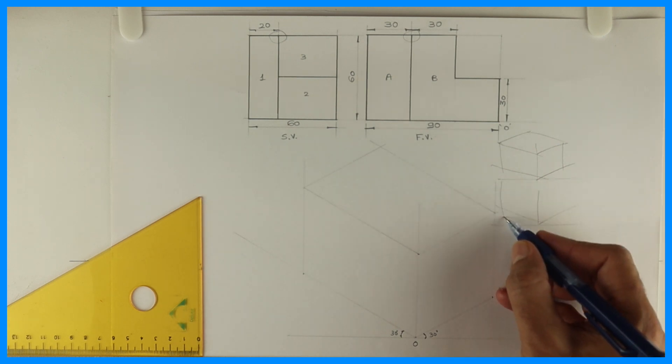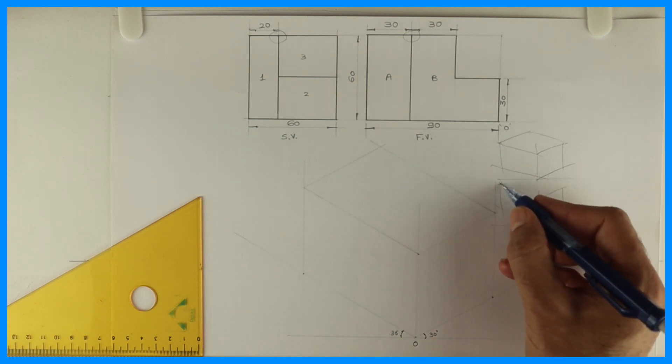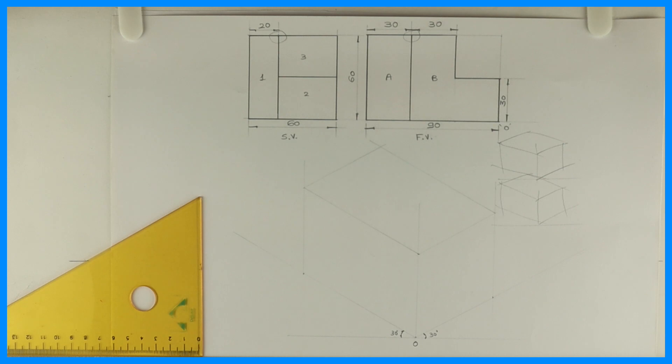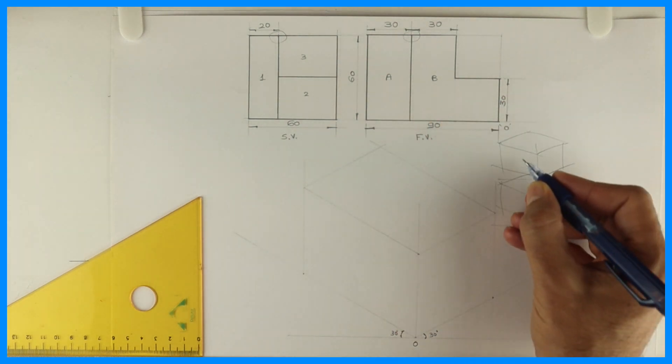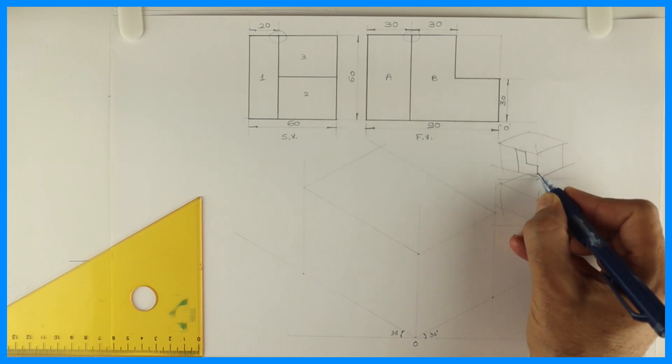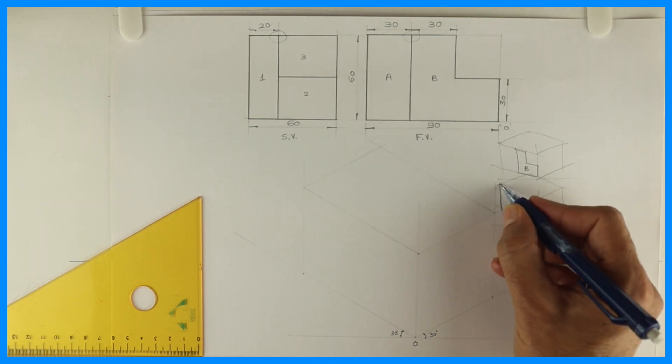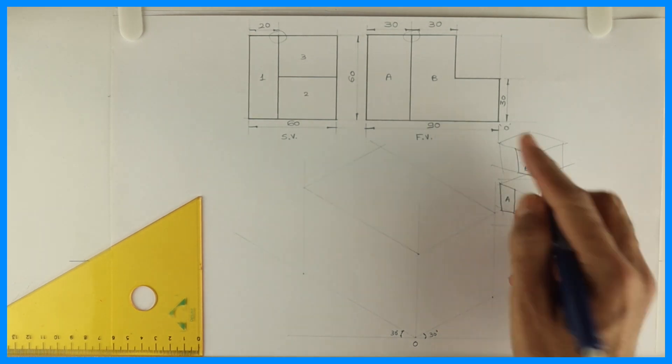Because A and B there are two parts, right? So what I will do, I will draw two boxes. Now in one, I will consider B is nearer to me. And in another one, I will consider A is nearer to me.